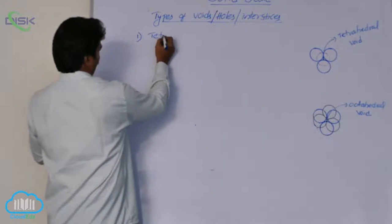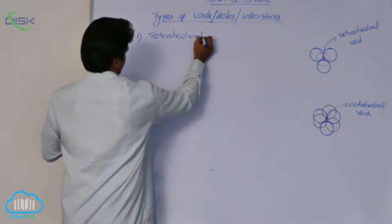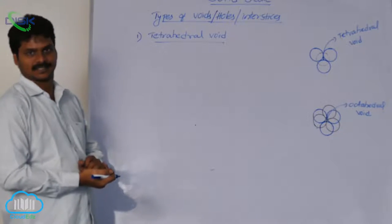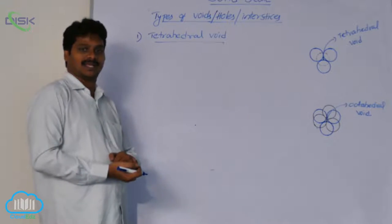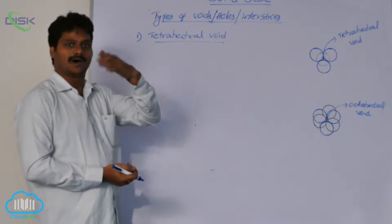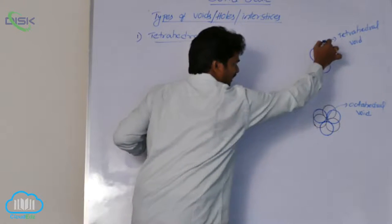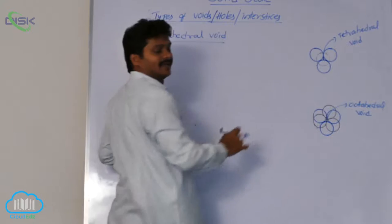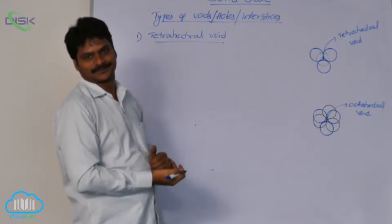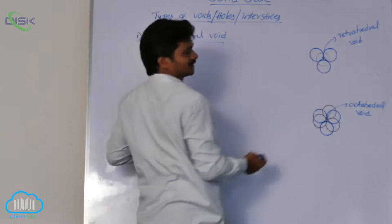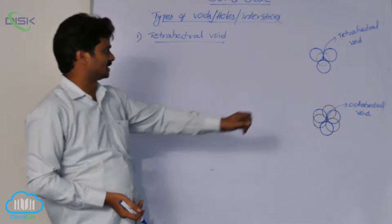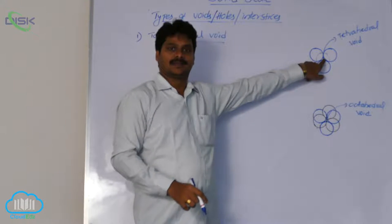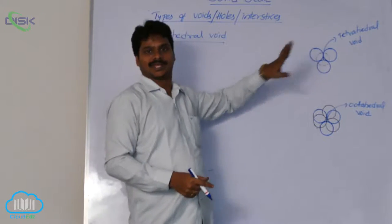First, let's look at the tetrahedral void — how is it formed? A tetrahedral void is formed from 4 spheres, that means 4 particles: 3 particles from the same layer and 1 particle from its above or below layer. Here, the blue circles indicate one layer — let's call it layer A — and the black circle indicates a sphere from its layer above. In between these four spheres, an empty space is formed. That empty space formed between the spheres of the two layers is called the tetrahedral void.